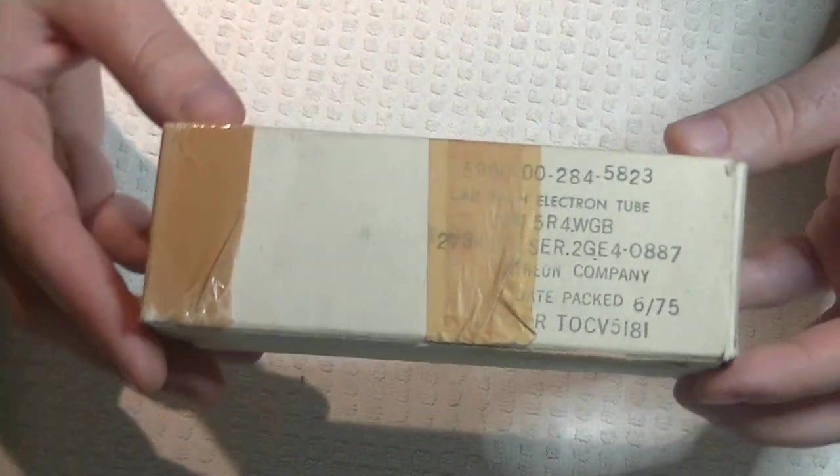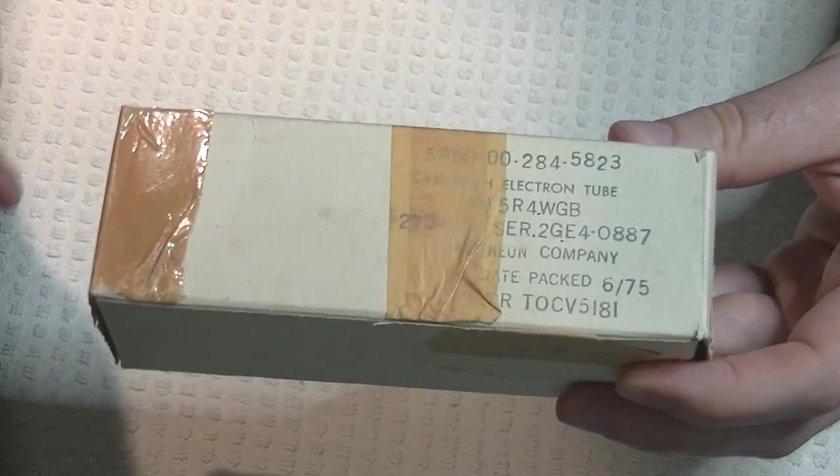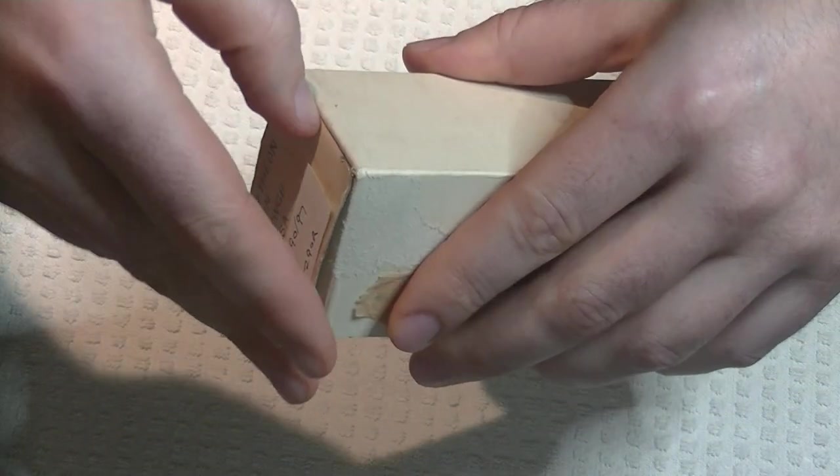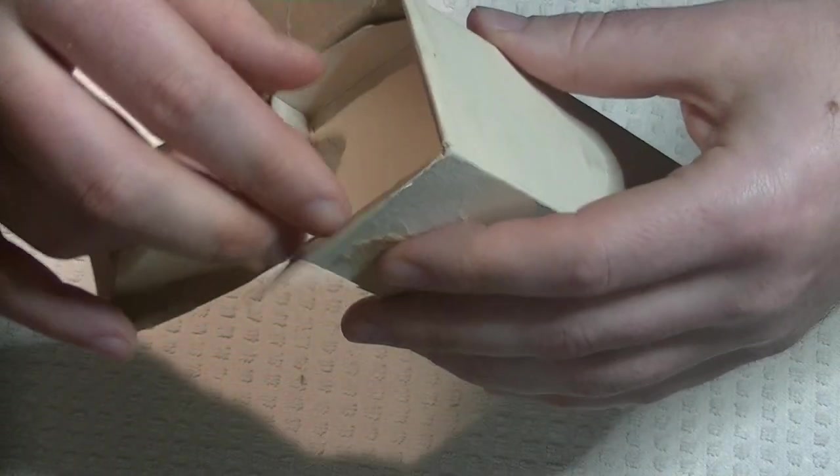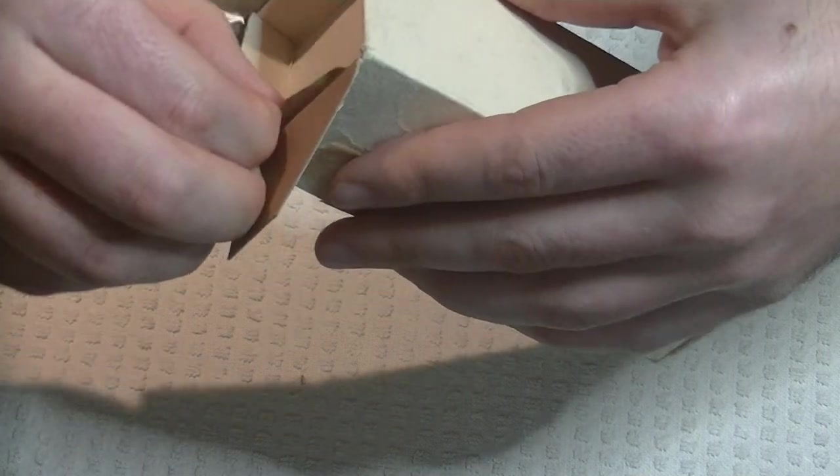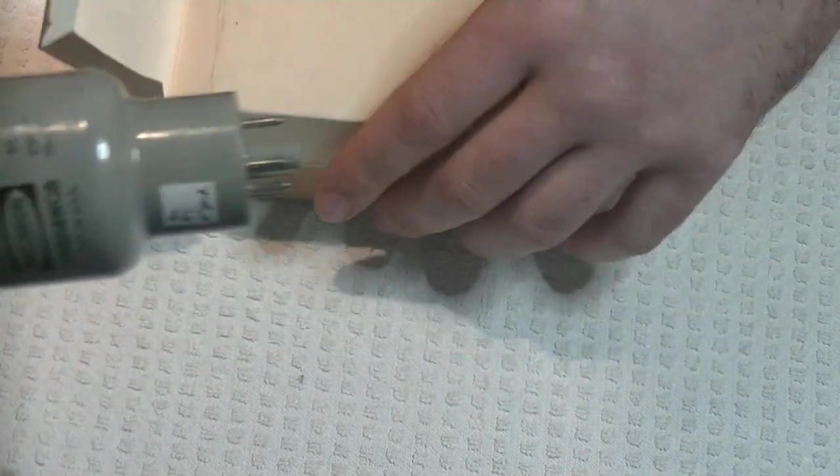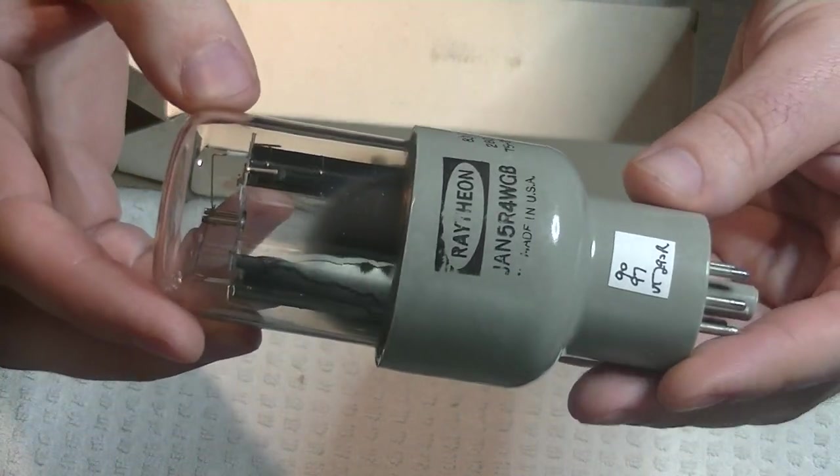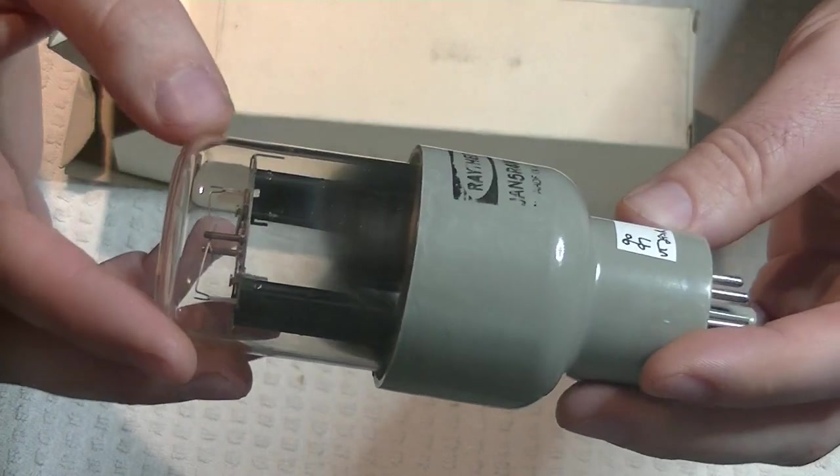Okay. So we've got another military box here. This one is a 5R4WGB made by Raytheon. We've looked at these guys before on screen, but they're such a neat tube. And of course we're talking about rectifiers, so how can we leave this out? They're also known by a different name, which is pretty obvious once you take a look at them. They're called the Potato Masher. And judging by the thickness and the weight of this thing, you could probably mash some potatoes with it, no problem, and still plug it in and it would work.